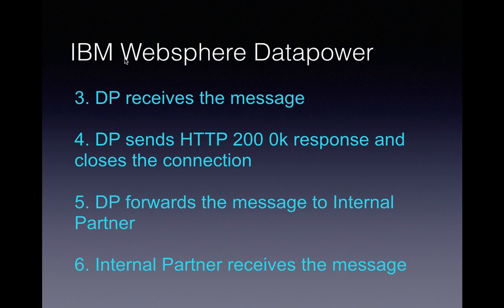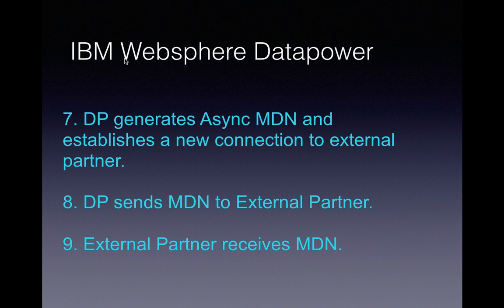The message is forwarded to DataPower. Once DataPower receives the message, it sends an HTTP 200 OK response and closes the connection. HTTP 200 OK response is the response for a successful transaction through HTTP protocol. After it closes the connection, DataPower forwards the message to the internal partner.